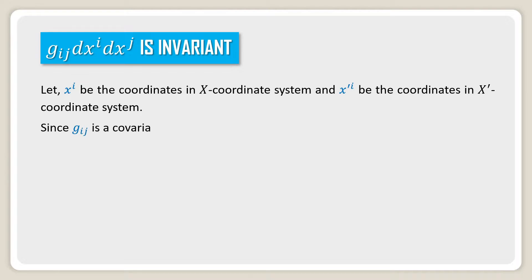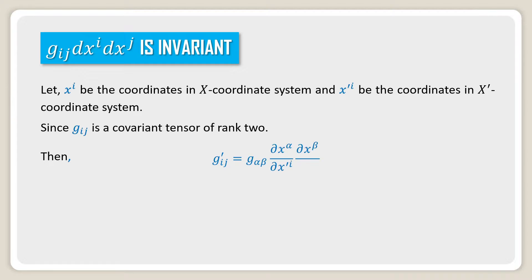Since g_ij is a covariant tensor of rank 2, then g'_ij is equal to g'_αβ times (∂x'^α / ∂x'^i) times (∂x'^β / ∂x'^j).